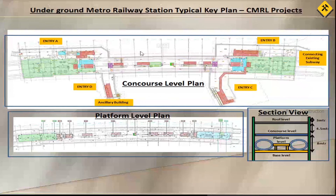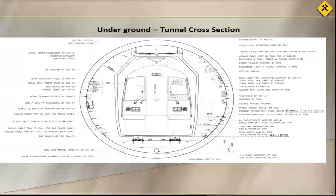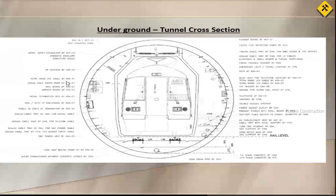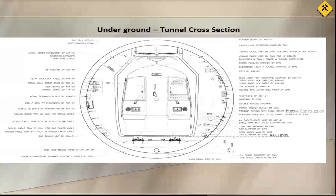This is the typical cross-section of the tunnel where the train runs. More than 30 utilities are run through the tunnel for the metro. Signal and systems cables run from one station to another. There are electrical cables carrying electricity for the station buildings. There are also tunnel lighting systems — inside the tunnel it is dark, but for maintenance work there are lighting systems.